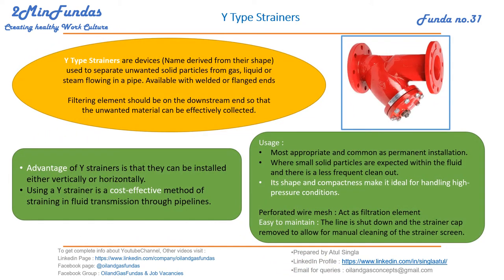Y-type strainers are devices used to separate unwanted solid particles from gas, liquid, or steam flowing in a pipe. Their name derives from their shape — they are Y-type shaped, which is why we call them Y-type strainers. These are available both as butt-welded joint and flanged connections.